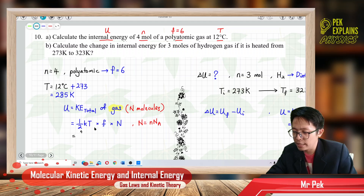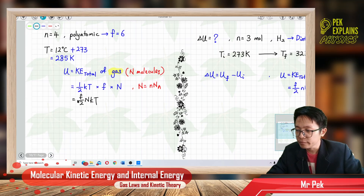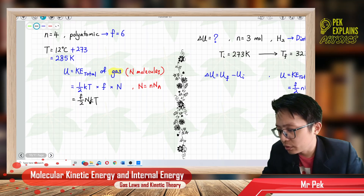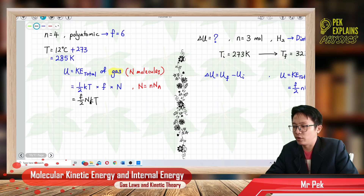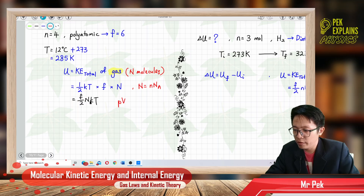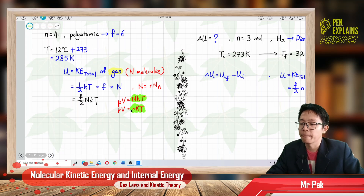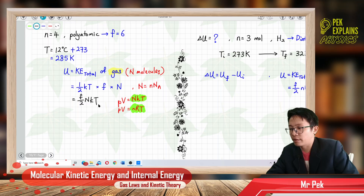This is the formula for the total kinetic energy of the whole gas. Do you see the NKT here? We learned before that PV equals NKT, and PV also equals nRT. So NKT is the same as nRT or also the same as PV. So this NKT I can change to nRT. So the formula is F over 2 times nRT.